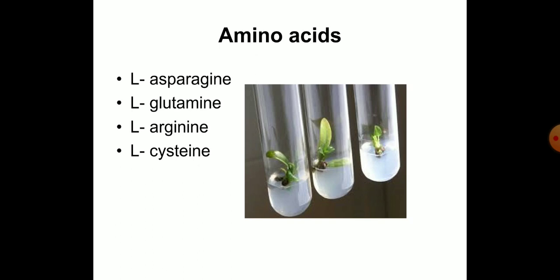Various amino acids and amides are used in plant tissue culture media. The most widely used amino acids are asparagine, glutamine, arginine, and cysteine.